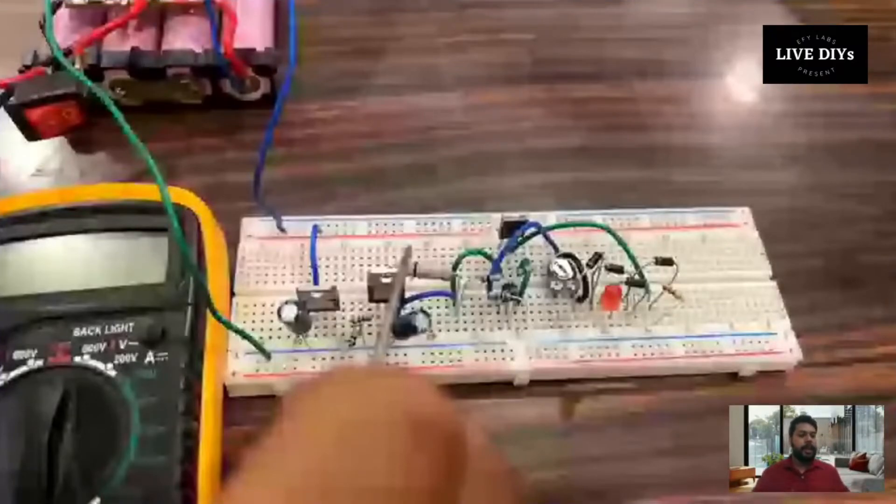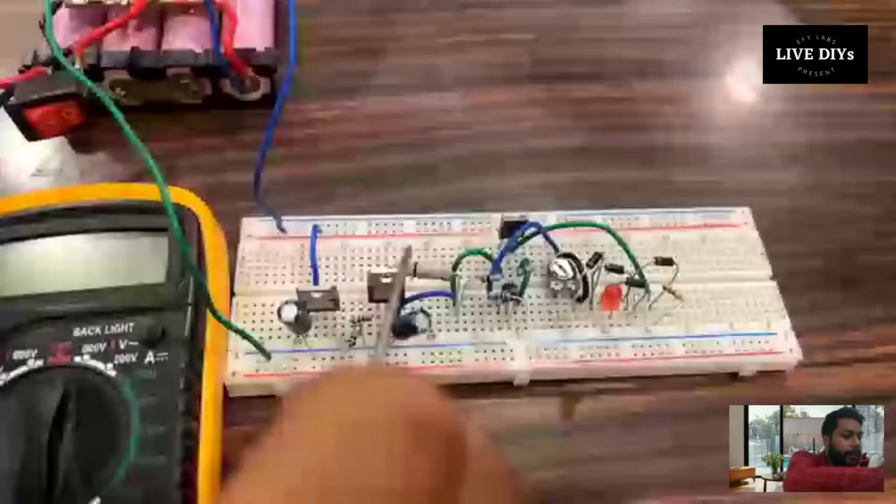Now, showing the working of the circuit is a bit tricky because cells take time to charge. I'll just show you - I've used a previously made battery pack which I made in my first DIY, or basically the third DIY of EFY. I'm using the same battery pack to provide the current.